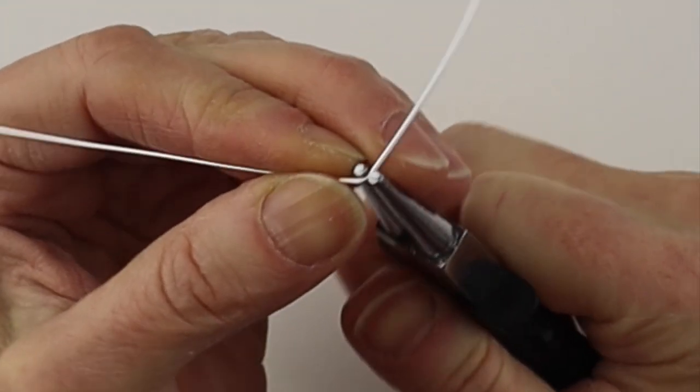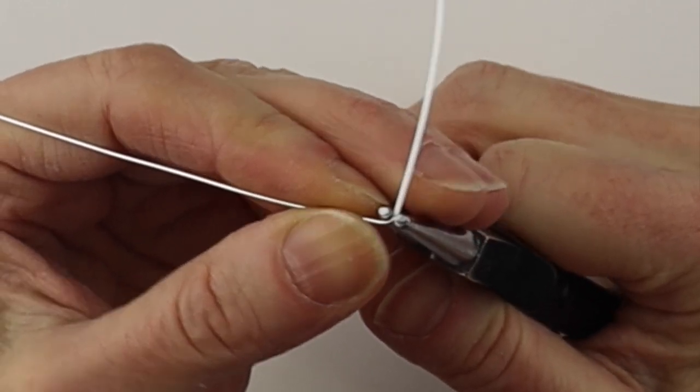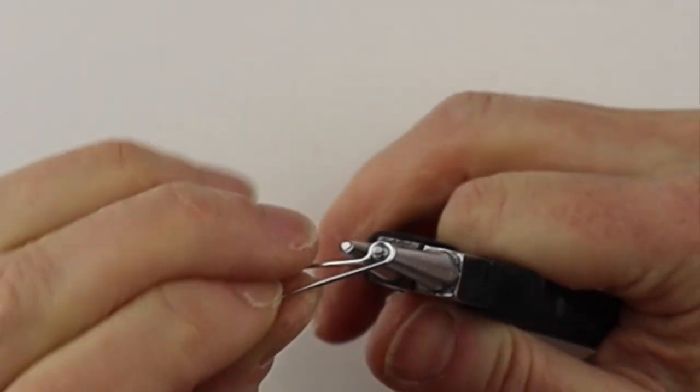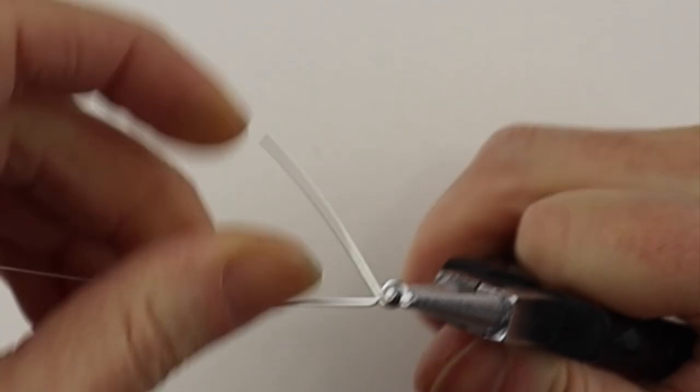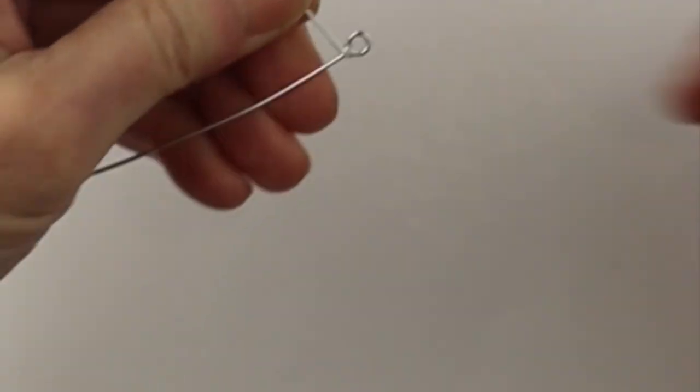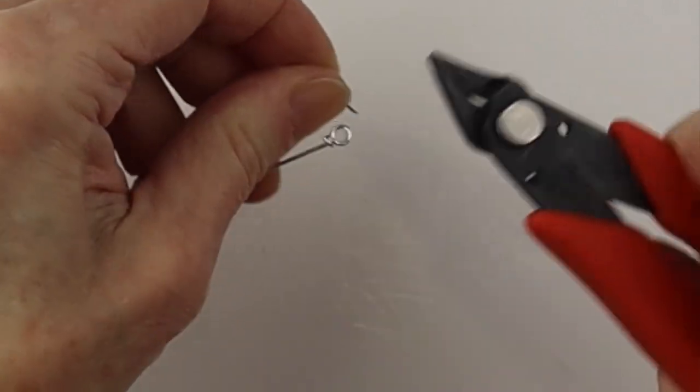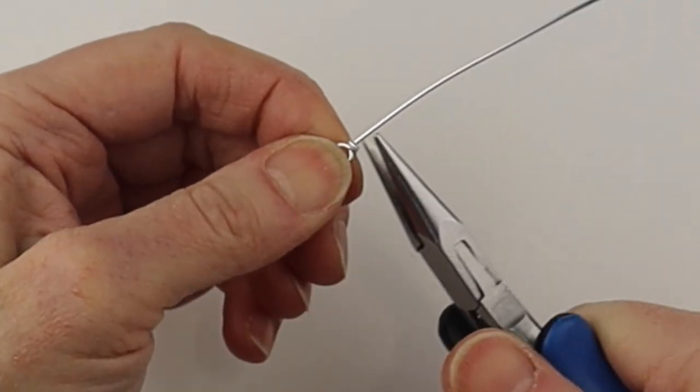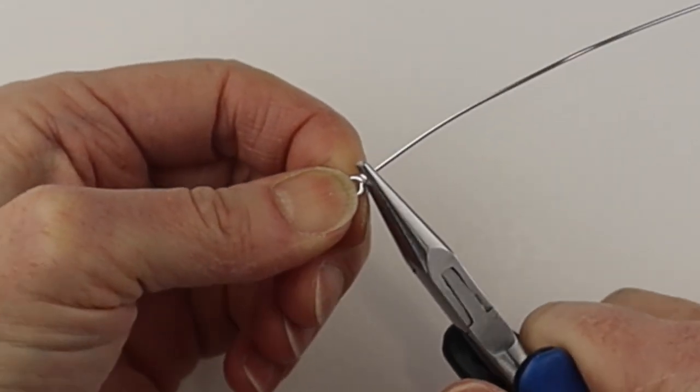And after that we're going to take some 20 gauge wire and form a loop on the end. Wind it around, clip the end, pinch it in place so it's not sharp.